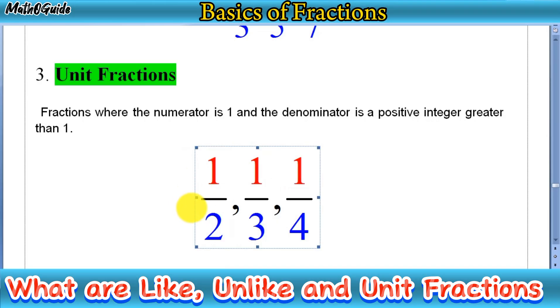Simply, if you want to check unit fractions, you have to check the numerator first. We have here 1 in all these fractions. You can see that 1 over 2, 1 over 3, and 1 over 4, and denominators are greater than 1 and positive integers. So these 1 over 2, 1 over 3, and 1 over 4 are examples of unit fractions.